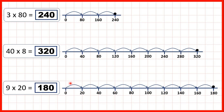So because we've added 20 each time and we've made 9 jumps, we know that 9 times 20 is 180. And again, we can see that counting in steps of 20 — or counting in steps of 2 tens — is just like counting in steps of 2, but with a zero on the end.